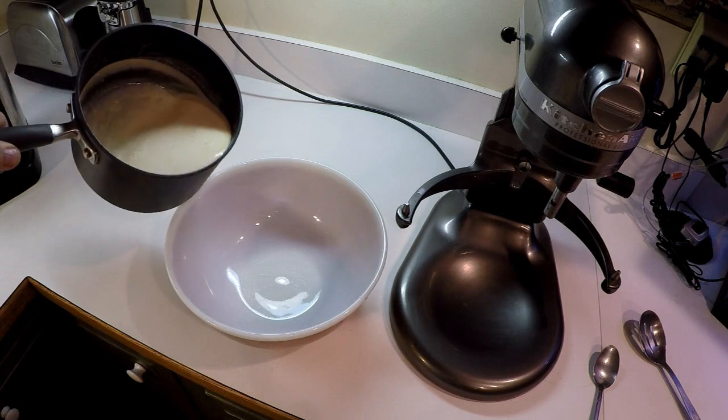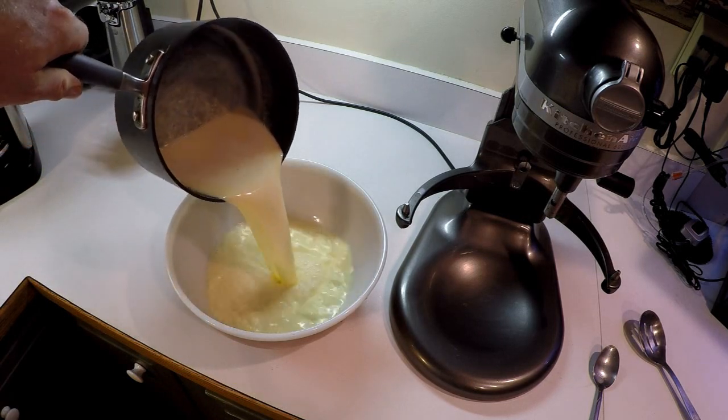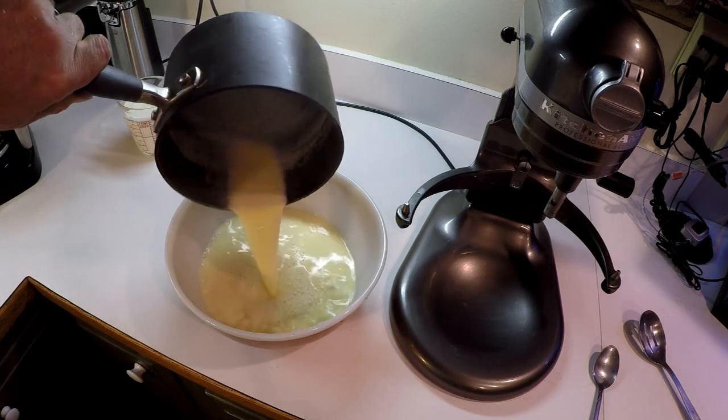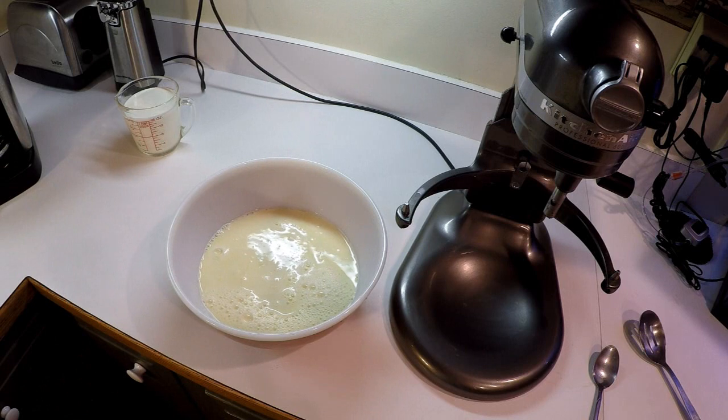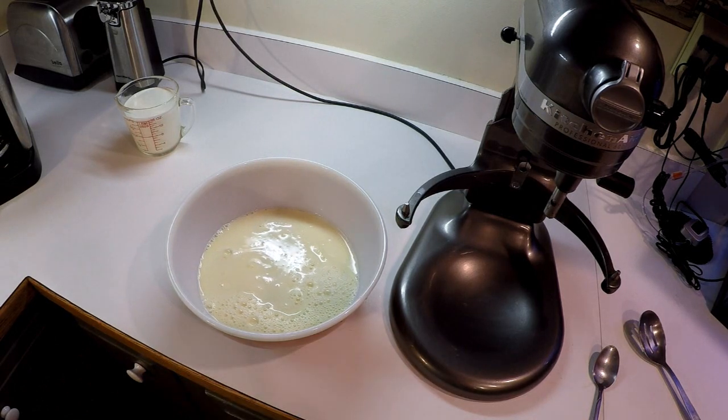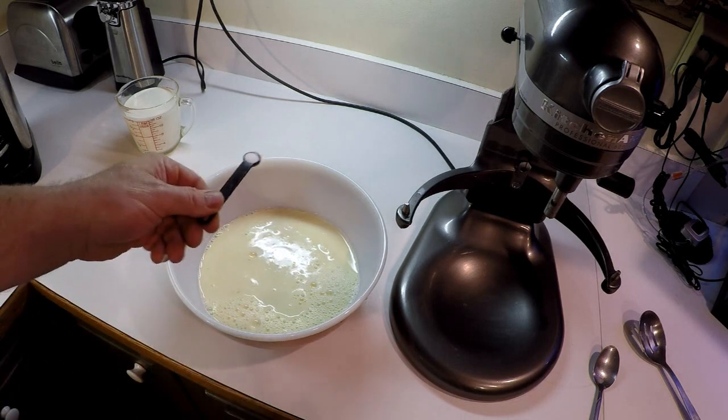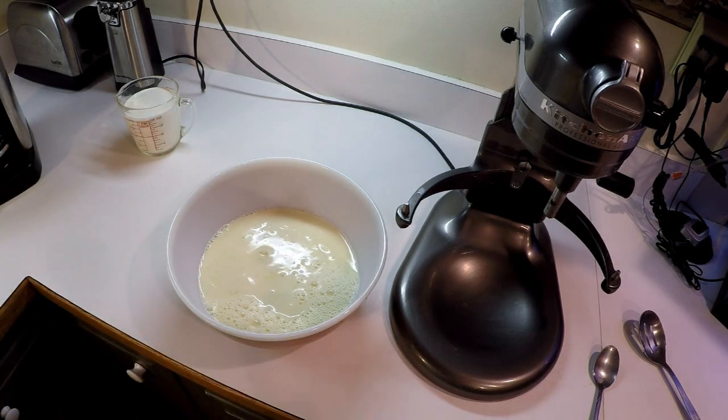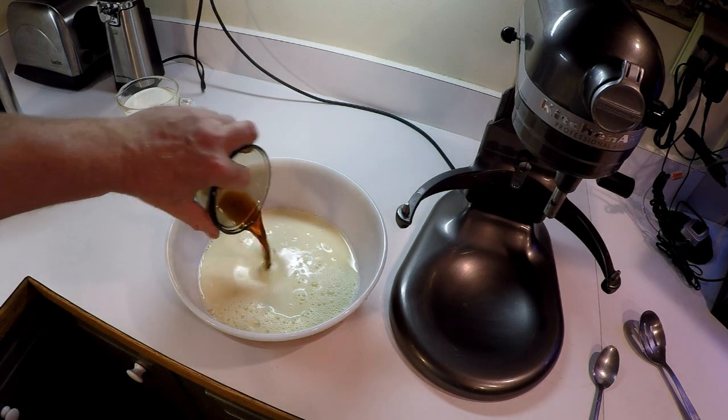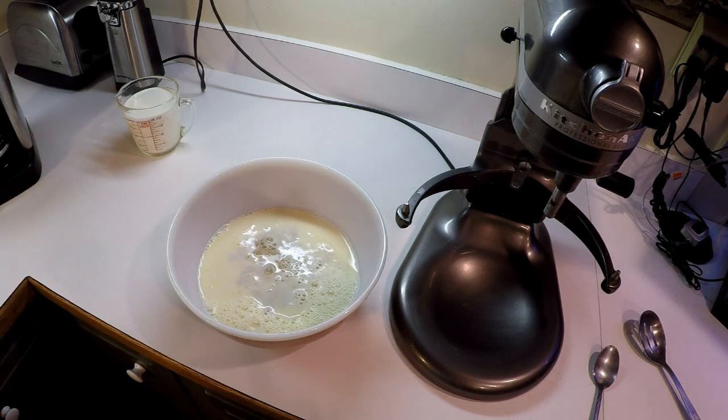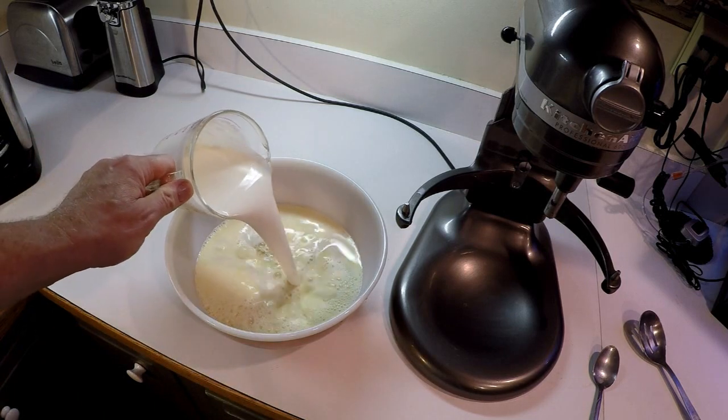So we have a bowl here. We're going to pour our mixture into the bowl. You never wanted to scorch it, so you've got to watch it close when you're bringing it up until it's steamy. We're going to add our salt. We're going to add our four tablespoons of vanilla.